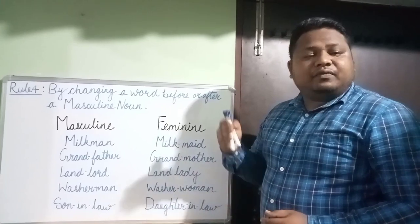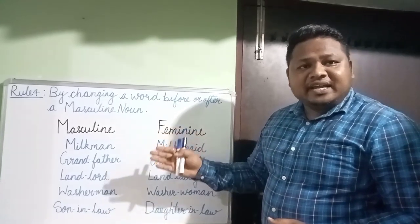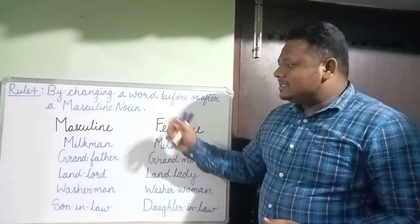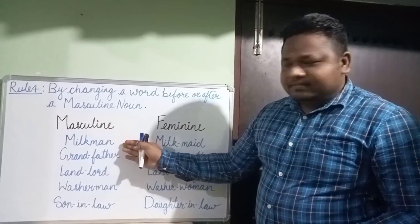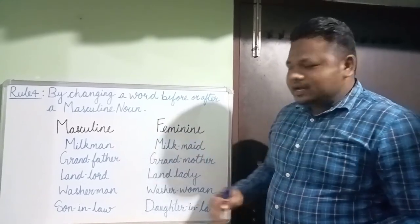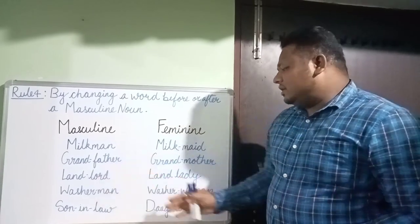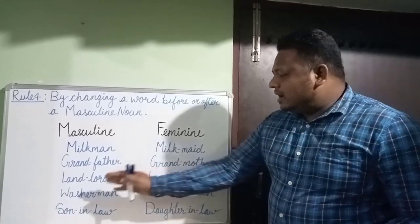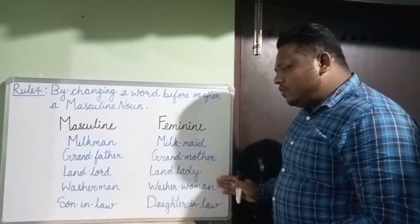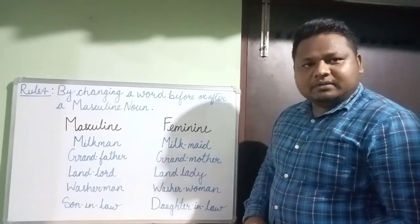Rule four: by changing a word before or after the masculine noun. Examples: milkman → milkmaid (man changed to maid), grandfather → grandmother (father changed to mother), landlord → landlady (lord changed to lady), washerman → washerwoman (man changed to woman), son-in-law → daughter-in-law (son changed to daughter).